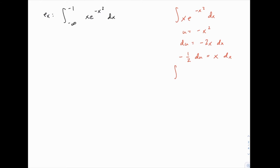When we substitute, we'll have negative one-half e to the u du, which integrates nicely to negative one-half e to the u plus C. Since we're going to do a definite integral later, we can leave off the plus C. Our answer is just negative one-half e to the negative x squared. We could check this by differentiating, but that's the correct answer for the indefinite integral portion.